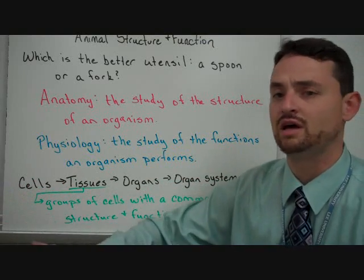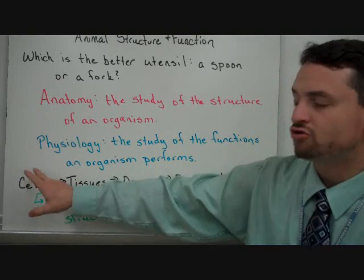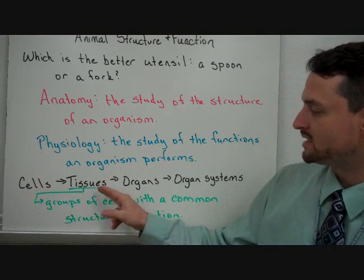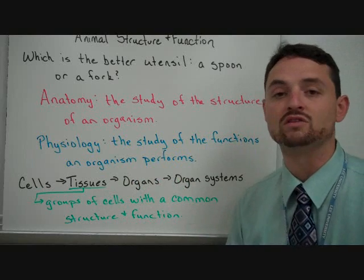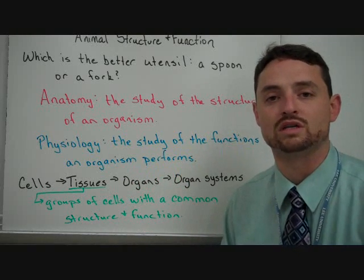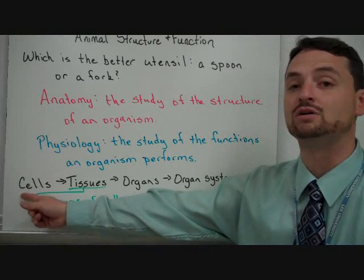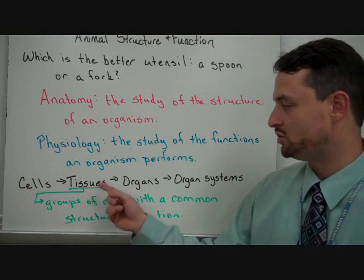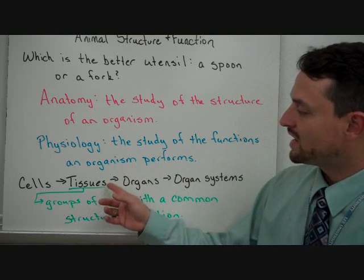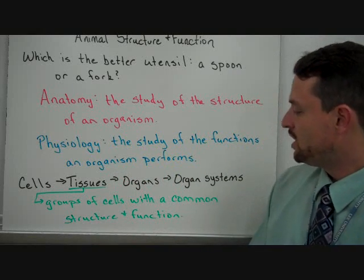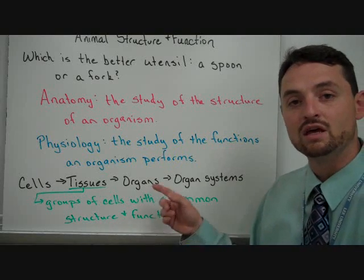Going back to the very basic beginning: cells come together to make tissues, tissues work together to make organs, organs work together to make organ systems, and organ systems all work together to make the organism. We're going to start here with tissues, and build through the next couple chapters. Tissues are a group of cells with a common structure and function.